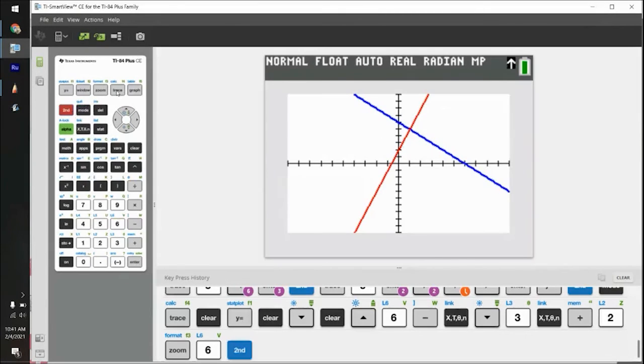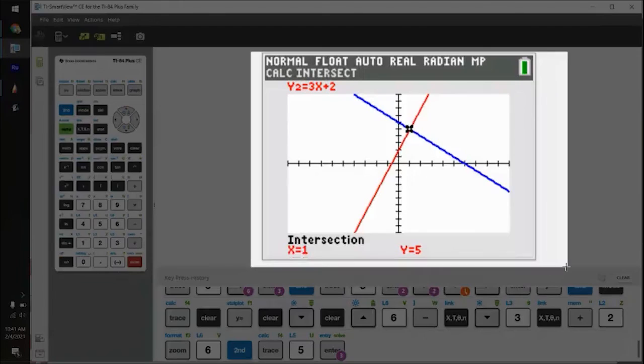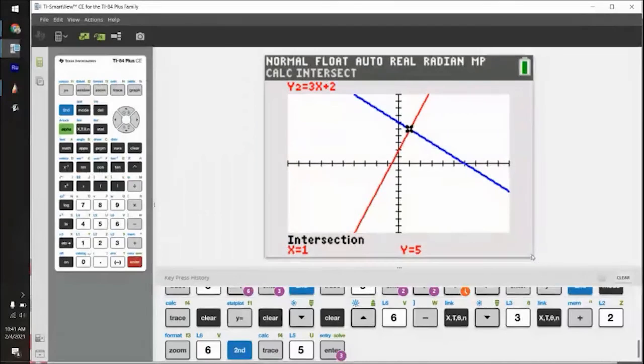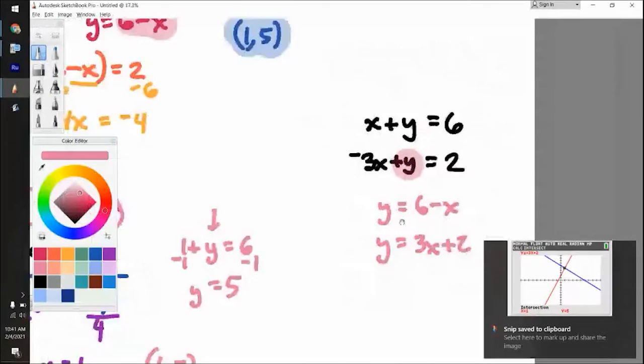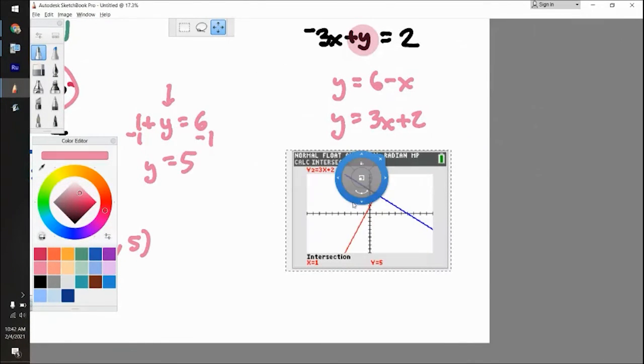So you do second calc five, just similar to what we did before, second calc five, enter, enter, enter, and you get one comma five. And as you can see, you end up with the exact same answer that we got for all the other ways of doing it.